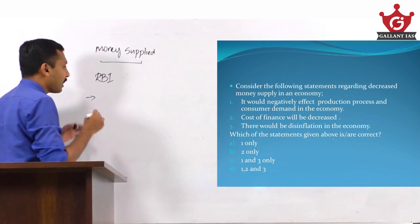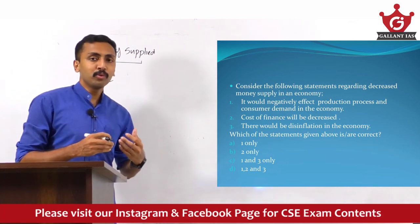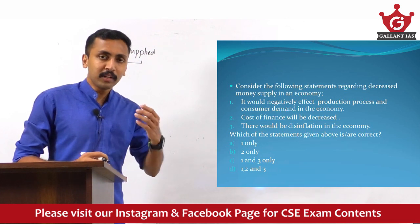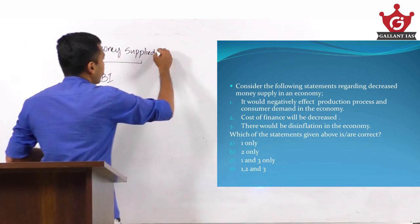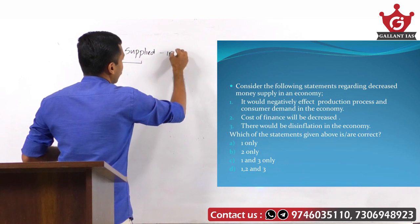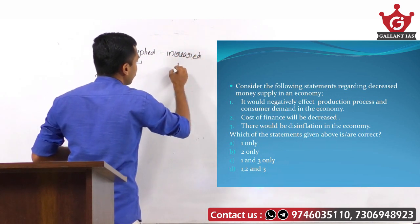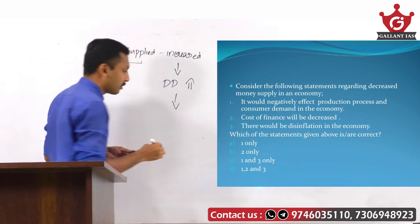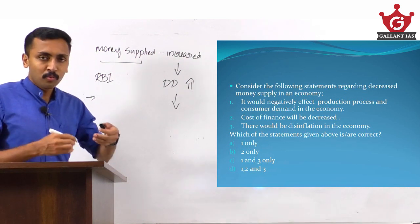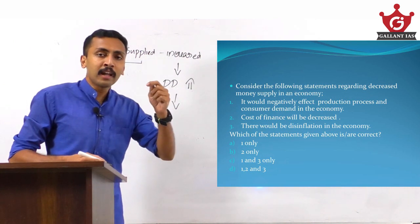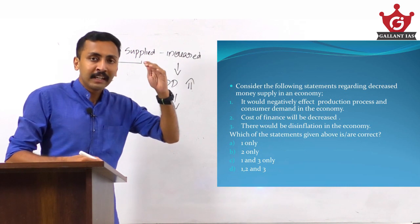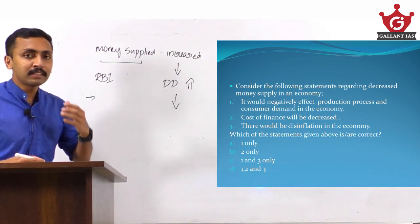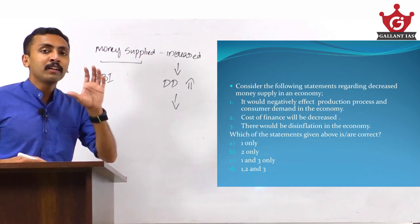If there is excessive money available in the economy, what do we do? Either we save it or we demand more goods and services — we buy more. That means demand in an economy will increase with excessive money supply. Increased money supply means demand for goods and services increases. If demand increases, prices of goods and services increase. The general price level in an economy will increase — that means inflation. Inflation is a persistent increase in the general price level.